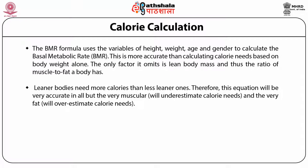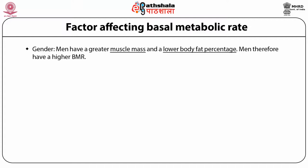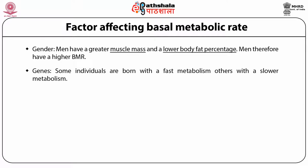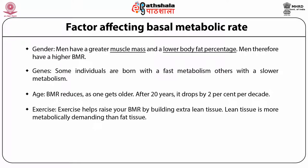Factors affecting basal metabolic rate: Men have greater muscle mass and a lower body fat percentage and therefore have a higher basal metabolic rate. Genes — some individuals are born with fast metabolism, others with a slower metabolism. Age — BMR reduces as one gets older; after 20 years it drops by 2% per decade. Exercise helps raise BMR by building extra lean tissue, which is more metabolically demanding than fat tissue. Weight — the heavier you are, the higher your BMR.